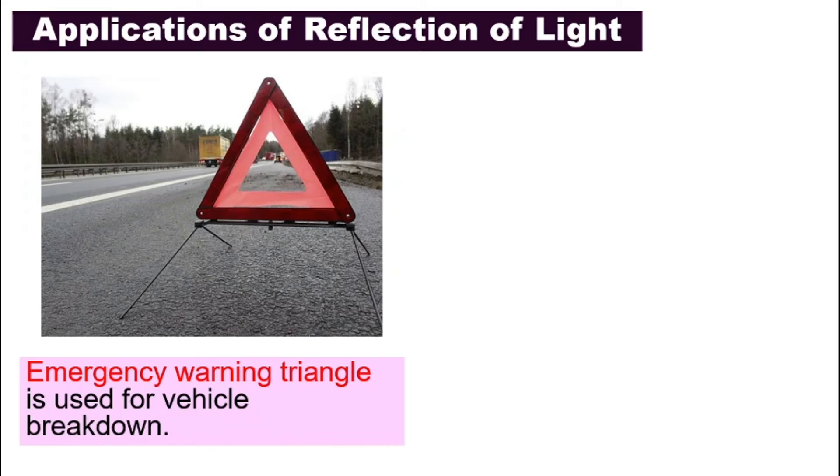What are some applications of reflection of light in our daily life? Number one, have you ever seen this type of triangle by the road side? It is called the emergency warning triangle. They are made of materials that is shining, that is reflecting light easily, so that it can be seen by other cars to know that there is a car or some vehicle in front of them that is breaking down, so they will avoid it.